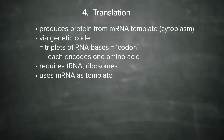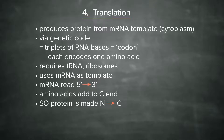The RNA is read 5 prime to 3 prime, and the protein is made from the amino to the carboxyl end.